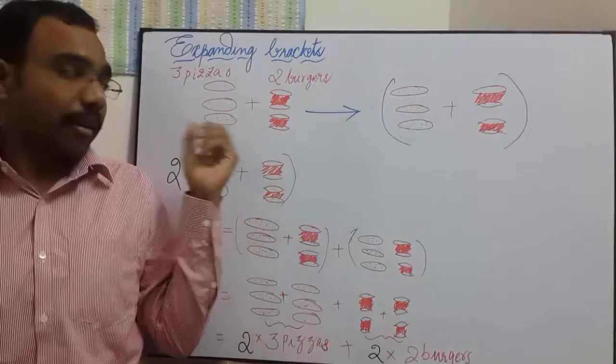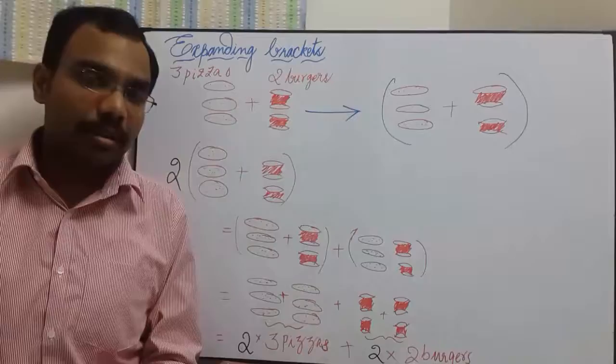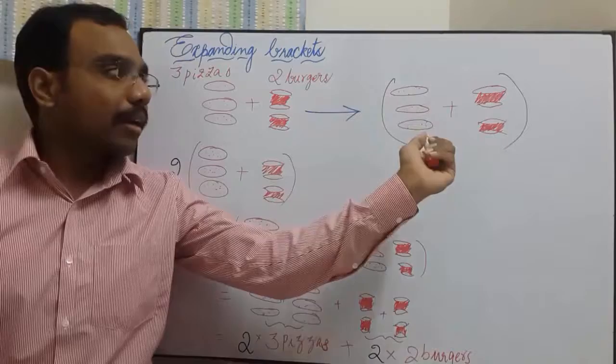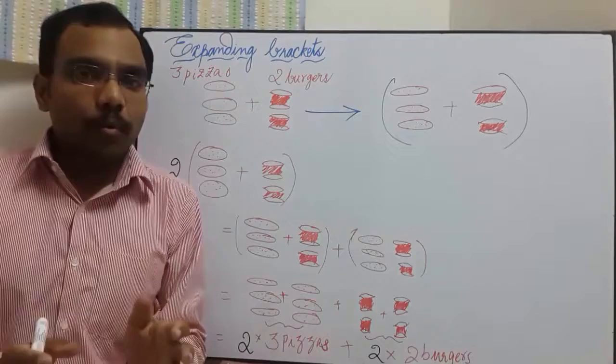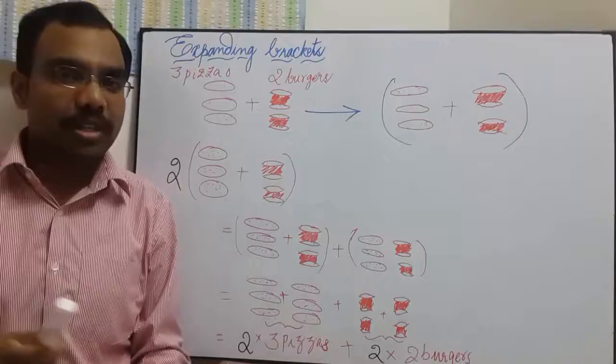Sometimes you often see that some food items are sold together. Say here, 3 pizzas and 2 burgers are sold together. Even though these are two different items, since they are sold together, let us use brackets to represent one packet. So one packet contains 3 pizzas and 2 burgers. Whenever we are considering two terms or three terms together, we enclose them in brackets to represent them as a single unit.